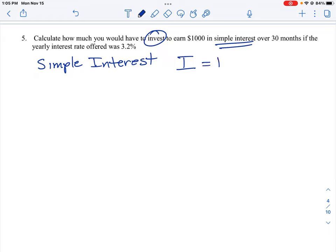It is equal to the principal, which is the amount invested, so that's the letter P, times the rate, the interest rate, which we'll use the letter R for, times the amount of time that the investment is left to sit. So interest is equal to principal times rate times time.